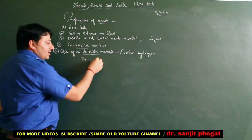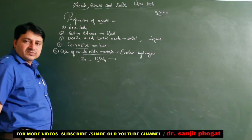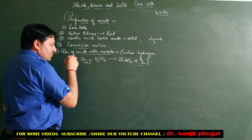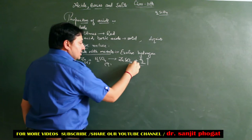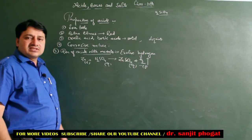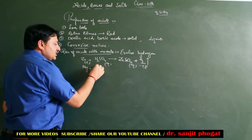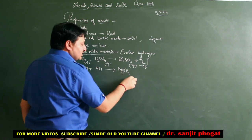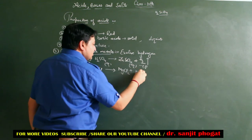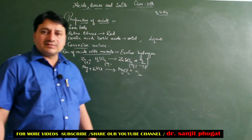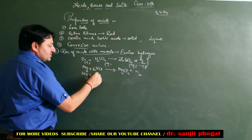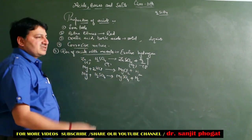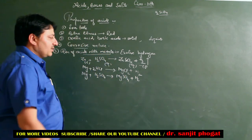जैसे example - Zinc को H2SO4 Sulfuric Acid के साथ react करवाओ तो ZnSO4 plus H2 मिलेगी। Zn Solid Form में था, H2SO4 Aqueous Form में है, और H2 Gas Form में release होती है। Magnesium के साथ HCl react करवाओ तो MgCl2 plus H2 मिलेगा। Mg plus H2SO4 से MgSO4 plus H2 मिलेगा। Acids जब भी Metals के साथ react करें, Hydrogen Gas liberate होती है।